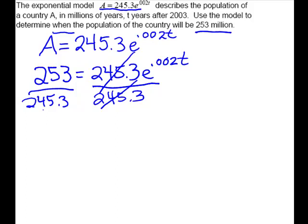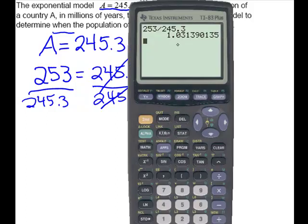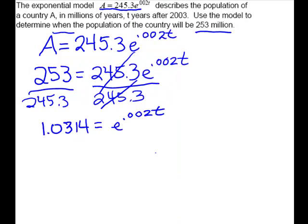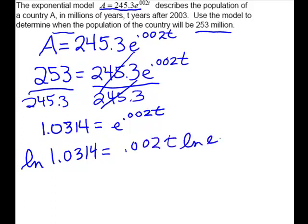We'll put this in our calculator and we'll get 1.0314 if we round to four places. So now we're ready to take the natural log of both sides so that we can make this exponent come down. So we'll take the natural log of 1.0314 equals - when you take the natural log on this side it will bring your exponent down times the ln of e. The ln of e is 1, so you're not going to need that. We're trying to isolate our t, so we're going to divide on both sides by .002.